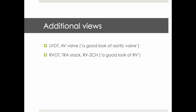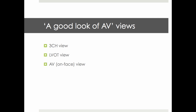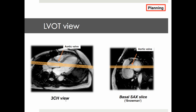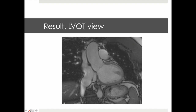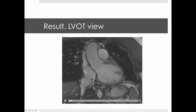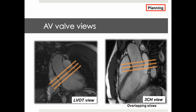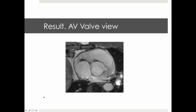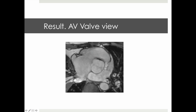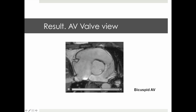Important additional views include those providing a good look at the aortic valve as well as the right ventricle. Aortic valve views include the 3-chamber view, LVOT views, as well as an en-face view of the aortic valve. In planning the LVOT view, we start with the 3-chamber view, place our imaging slides longwise to the ascending aorta, aiming for the middle of the aortic valve. The snowman image helps confirm we are cutting right through the middle of the aortic valve. We also place a series of overlapping slices in line with the aortic valve plane, resulting in an aortic valve view allowing appreciation of valve opening and morphology — in this case a bicuspid aortic valve.